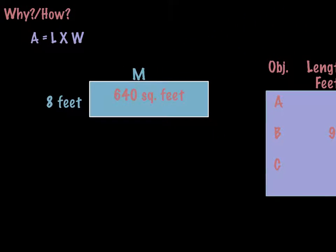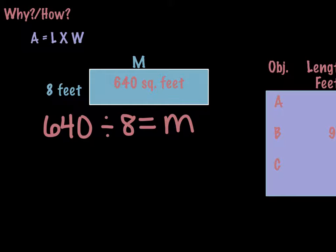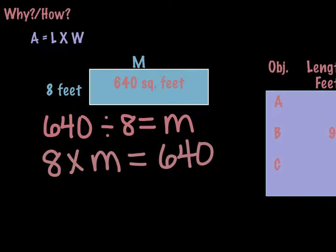Let's say that we have this shape and we know the length of this side, which is 8 feet, and we know the area, but we're missing this side right here. Can you think of an equation that's going to help you solve that? See if you can write that down. Did you come up with 640 divided by 8 equals M? Or did you do 8 times M equals 640? Either one of those would work. So hopefully you figured out that this side would be 80 feet.